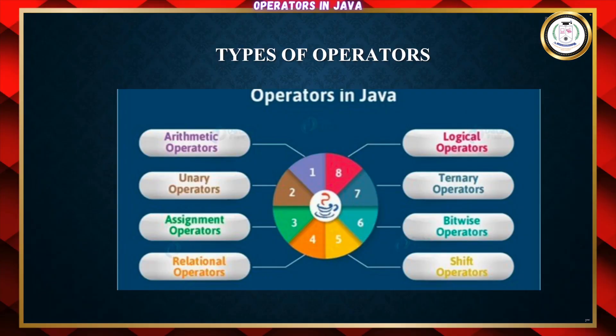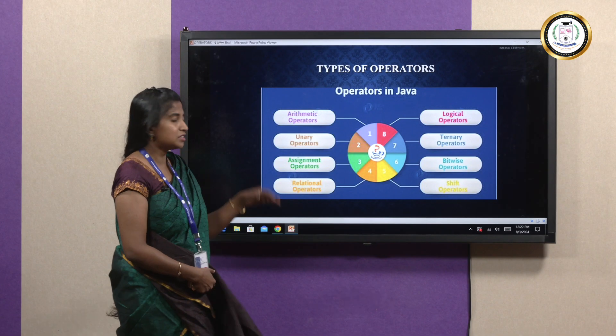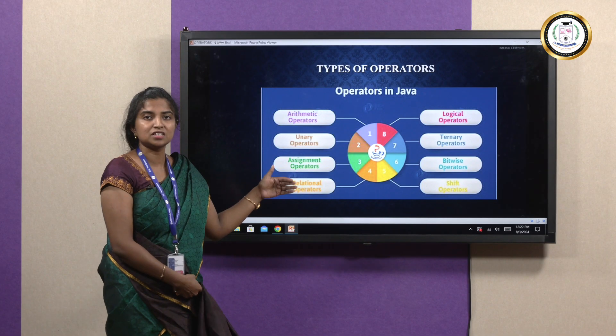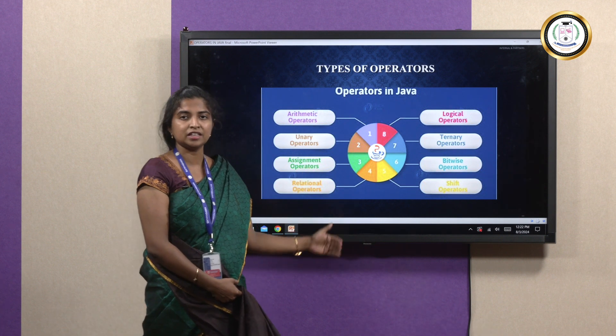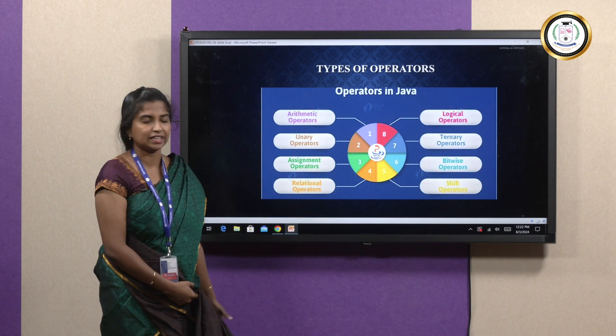Looking into the types of operators, there are different types. In particular with Java, there are 8 different types of operators present. Let me discuss each of these in detail in the upcoming slides.